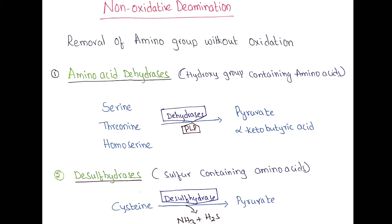Like serine, threonine, and homoserine and remove the ammonia from these amino acids without oxidation. Another example is desulfhydrogenase, which acts on sulfur containing amino acid like cysteine, and when they act, they remove the ammonia and form the corresponding ketoacid pyruvate.